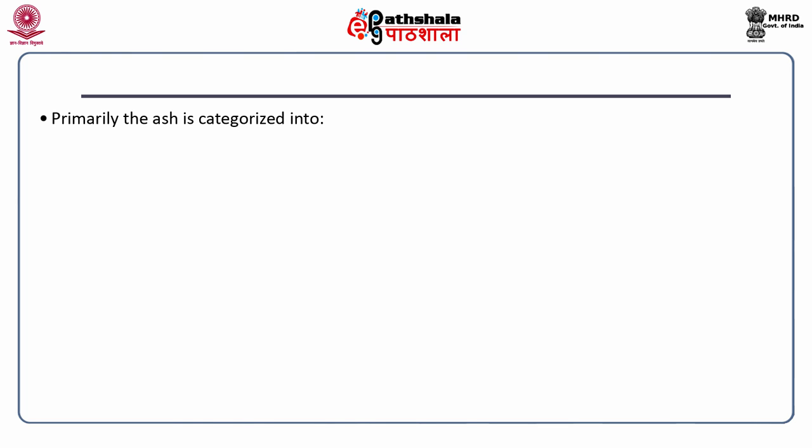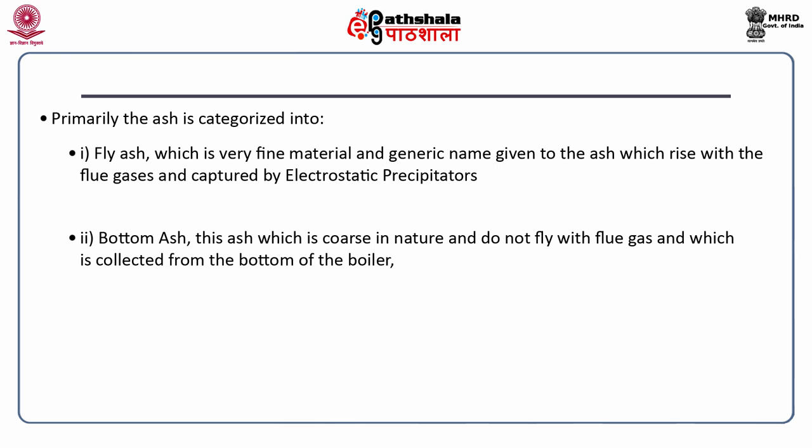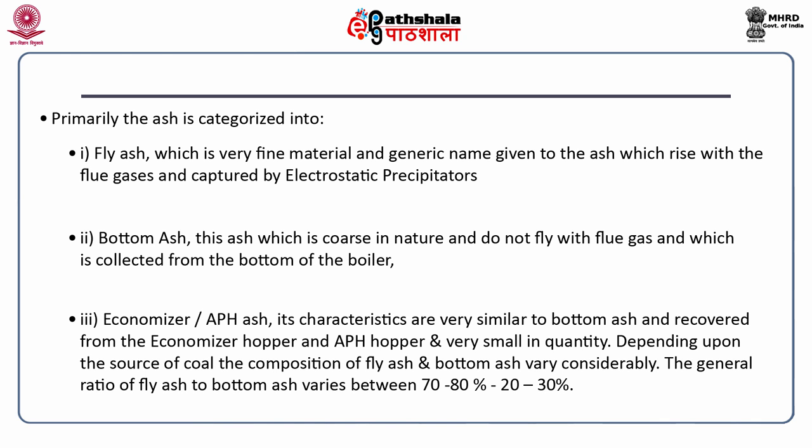Ash is primarily categorized into three categories: fly ash, bottom ash, and economizer ash. Fly ash is a very fine material — the generic name given to ash that rises with the flue gases and is captured by electrostatic precipitators. Bottom ash is coarse and does not fly with flue gases; it is collected from the bottom of the boiler. The third type, economizer or APH ash, has characteristics very similar to bottom ash and is recovered from the economizer hopper and APH hopper in very small quantities.